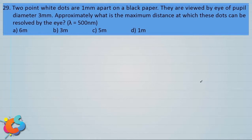Let's take up one more question. Two point white dots are 1 millimeter apart on a black paper. They are viewed by an eye of pupil diameter 3 millimeter. Approximately what is the maximum distance at which these dots can be resolved by the eye, given that the wavelength of light used is 500 nanometer? Options: A 6 meter, B 3 meter, C 5 meter, D 1 meter. This is also a problem based on the human eye and its resolving power, similar to a telescope.